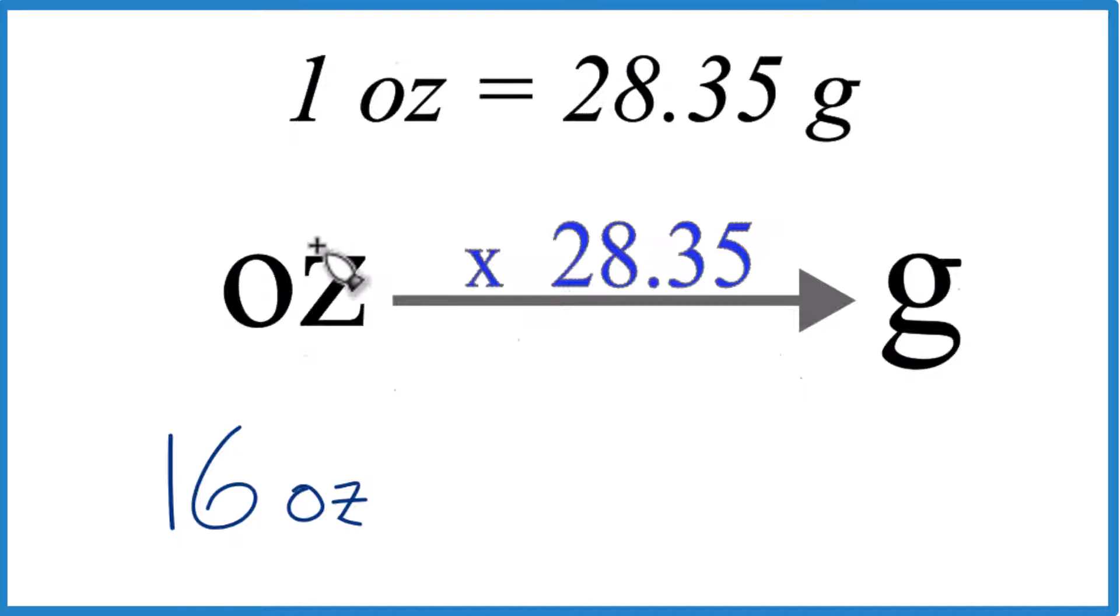So here we have 16 ounces, we're going to grams, and we multiply by 28.35. If you had grams and you're going to ounces, you divide by this number.